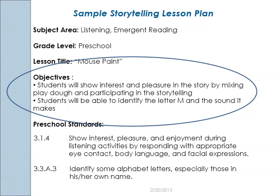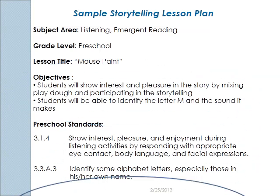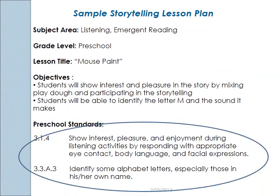So we've taken enjoyment and created behaviors that show they've enjoyed it. The second objective is: students will be able to identify the letter M and the sound that it makes. Where did we get these objectives from? We got them from the standards. I went back to the preschool standards and looked at what I really wanted the children to be able to do, and I used standard 3.1.4.